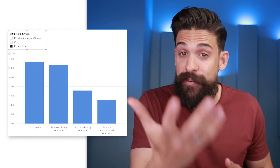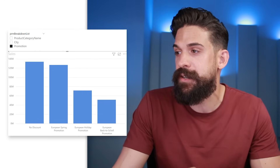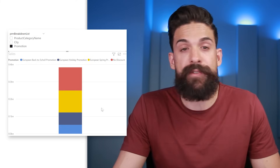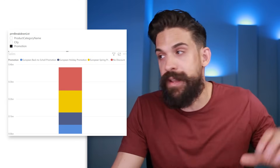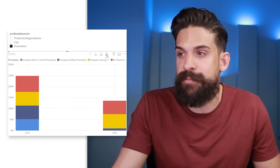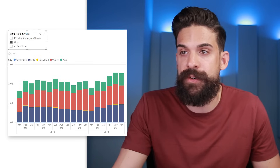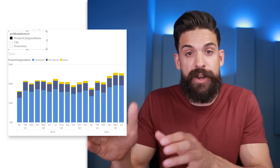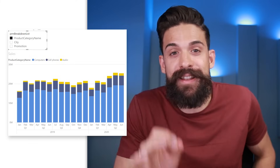Now we know how to set up field parameters and make adjustments. Let's look at another use case. Instead of having the parameter on the axis, it can also be super useful on the legend. We now have one bar with different colors for the different promotions, and we can break it down over time. I'll go to my date table, drag the date hierarchy onto the x-axis, and expand down to the month level. Now we can select promotions, switch to cities, or use the category name — so instead of showing this breakdown on the x-axis, we use it for the legend.